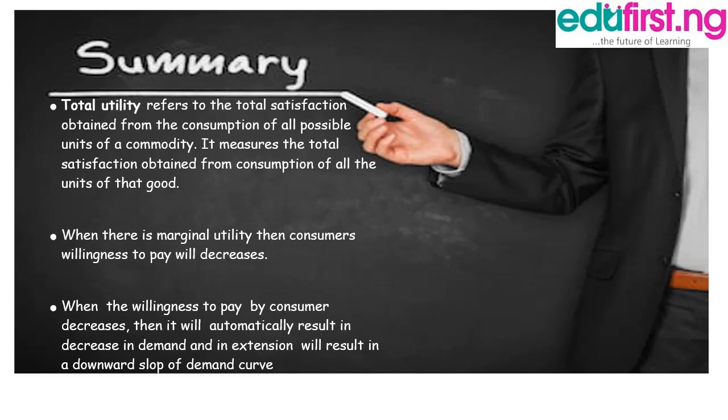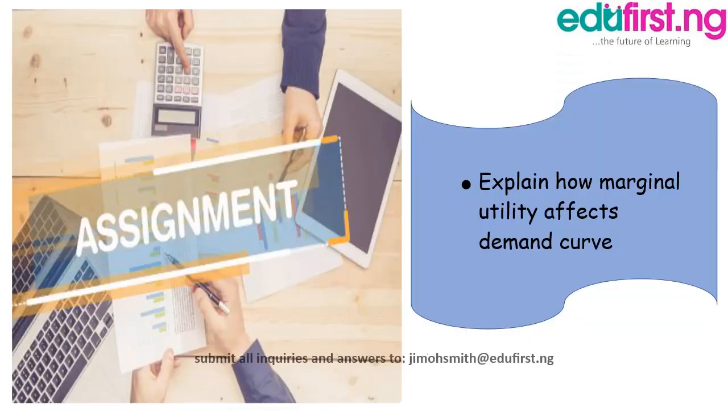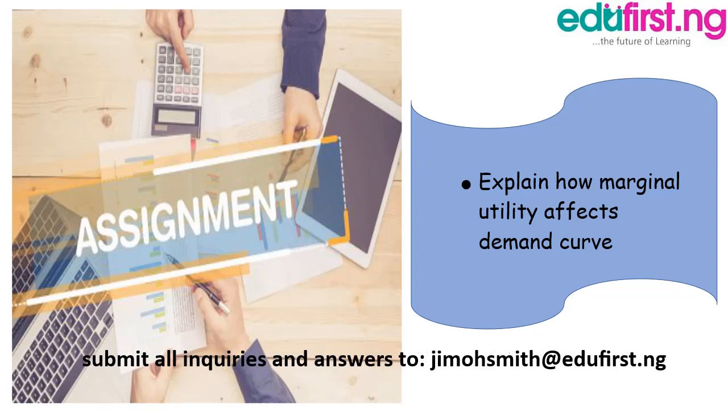In summary, we established that total utility is the total satisfaction derived from consuming all possible units of a commodity. Marginal utility refers to the additional satisfaction, and as marginal utility decreases, the willingness to pay also decreases. This results in a decrease in demand, and in extension, a downward slope of the demand curve. This is the end of today's class. See you same time next week, bye.